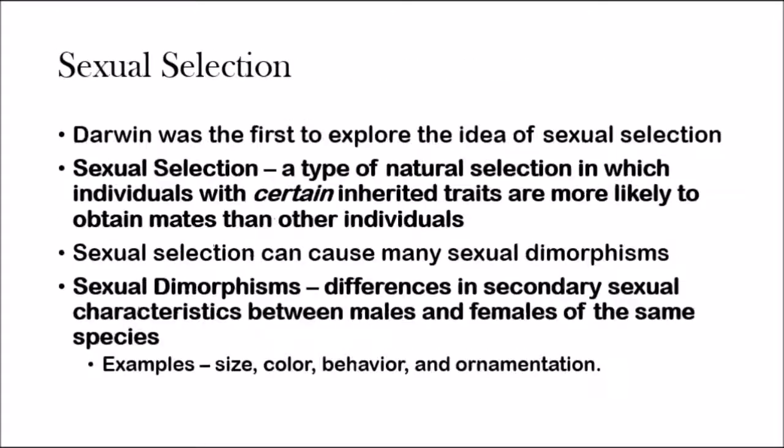Darwin was the first scientist to explore the idea of sexual selection. Sexual selection is actually a type of natural selection in which individuals with certain inherited traits are more likely to mate than other individuals — kind of like what we talked about at the beginning of the video with the lions competing to mate with a female lion.